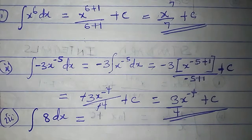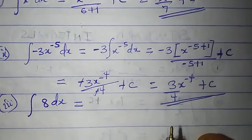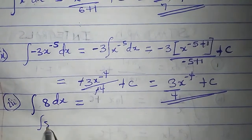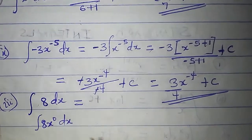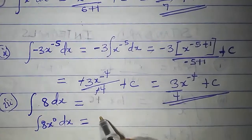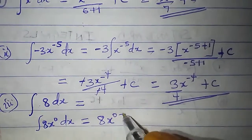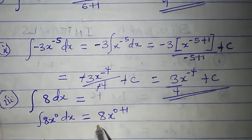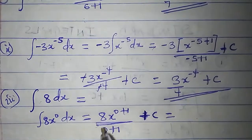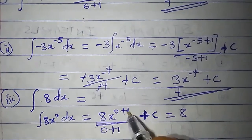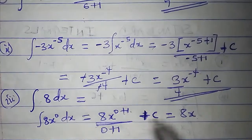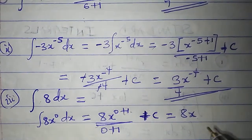What is the integral of 8 dx? 8 is a constant, and we can write 8 as 8x to the power of 0, since x to the power of 0 is 1. Applying the rule: 8 times x to the power of 0 plus 1, divided by 0 plus 1, plus c. Since 0 plus 1 is 1, this simplifies to 8x over 1, which is 8x plus c.